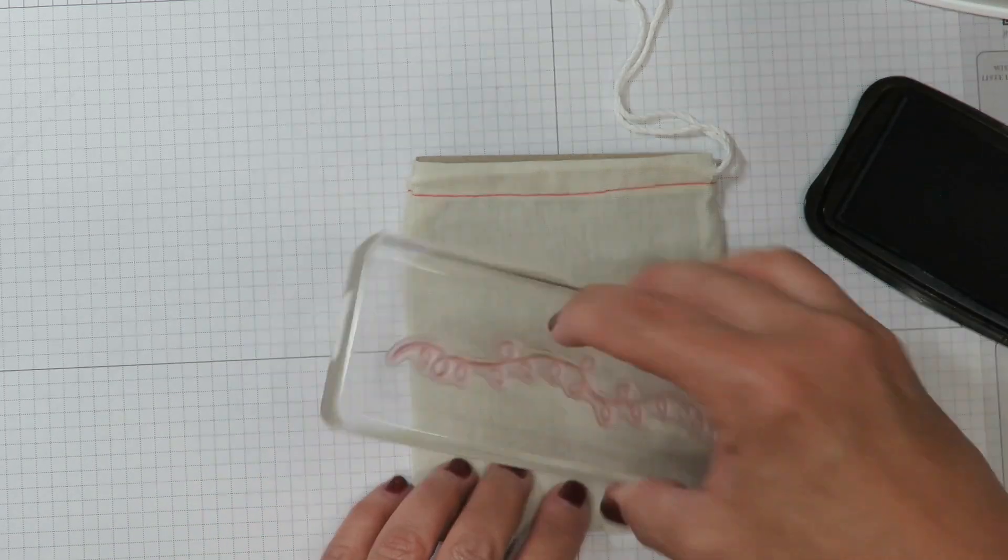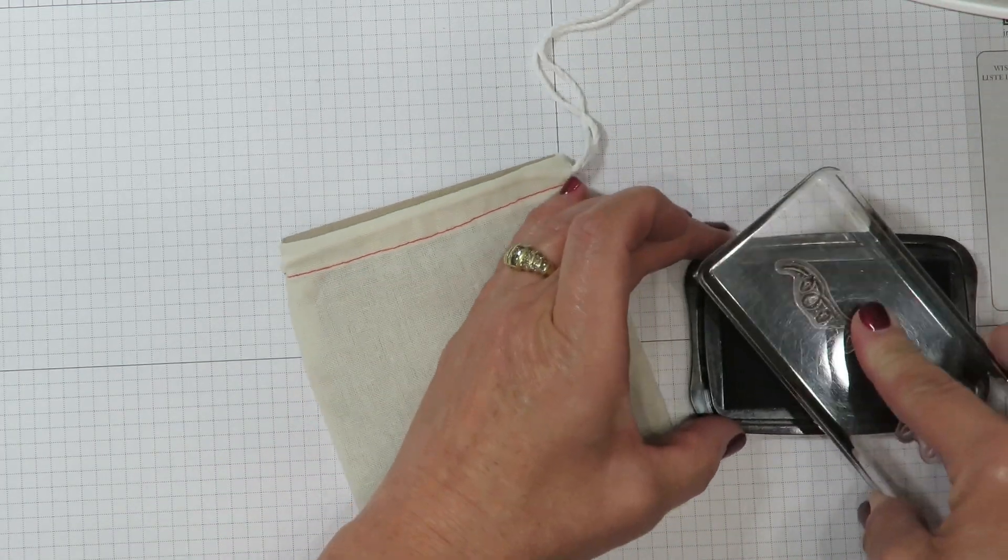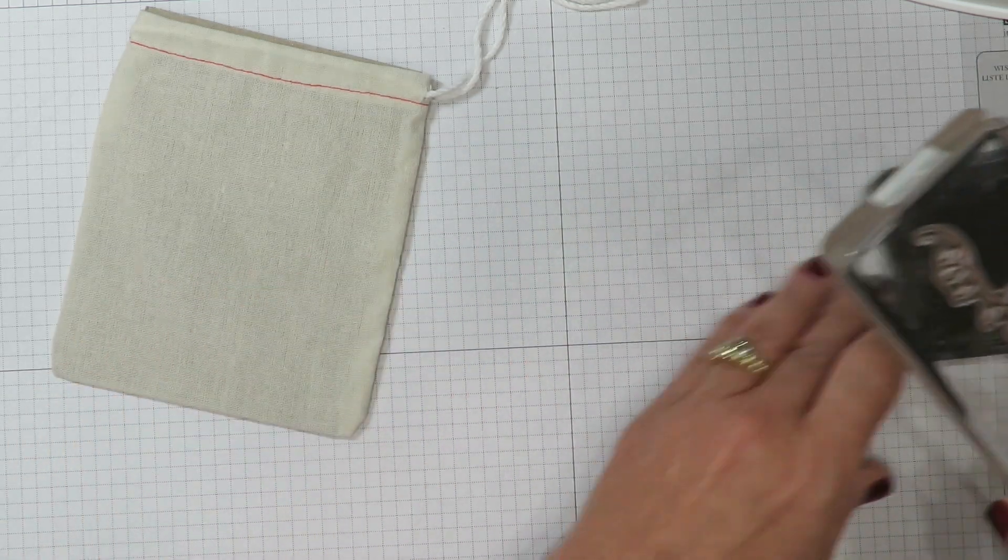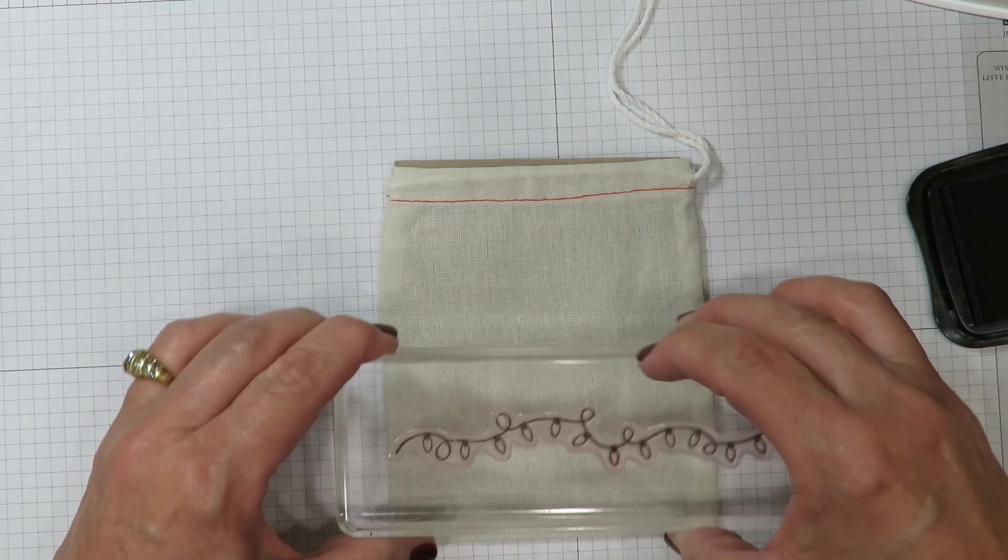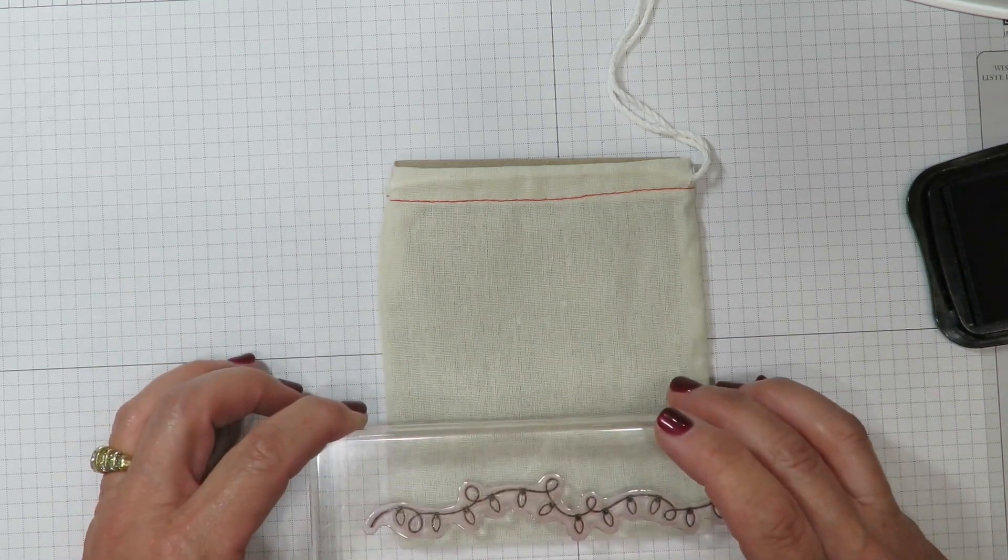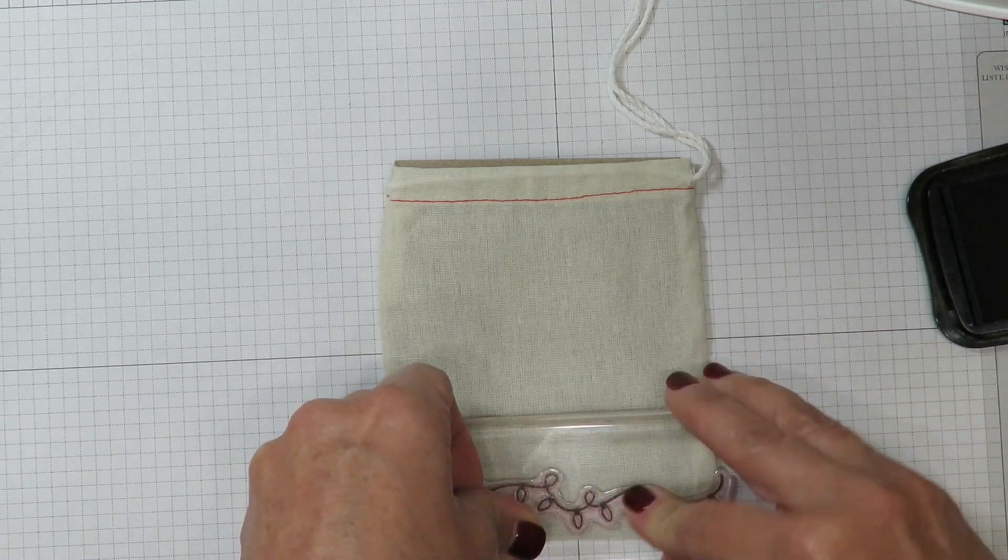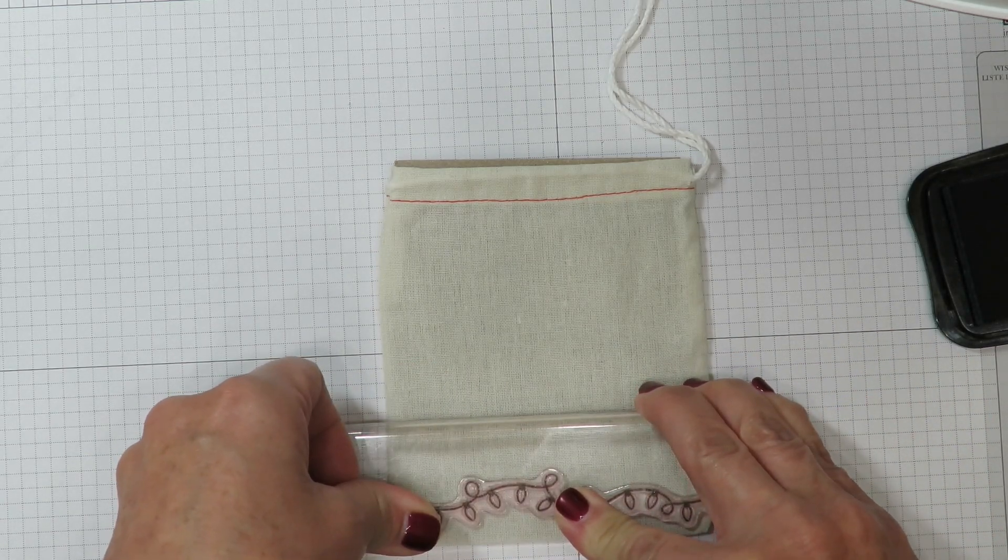I've got my Memento ink ready here. I'm going to ink up this photopolymer stamp, which means the photopolymer is going to pick up the color of the ink that you're using. I'm going to start here at the bottom and create lots of firm even pressure. Remember this is fabric, it's not cardstock. So you need to make sure you press firmly to get a good impression.